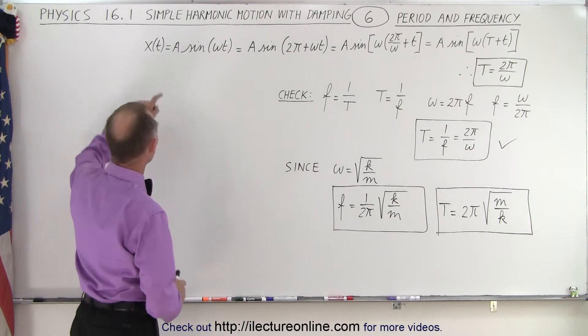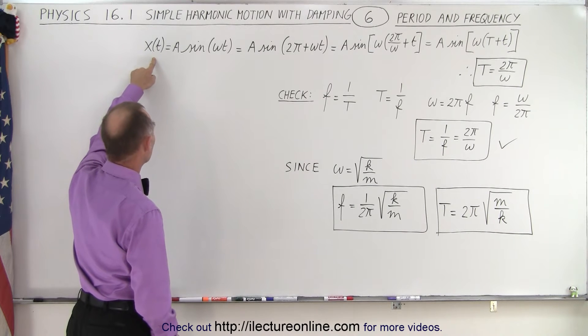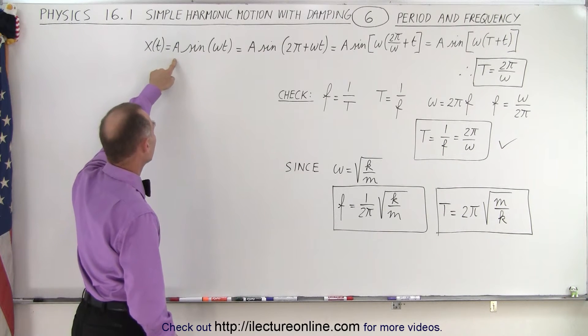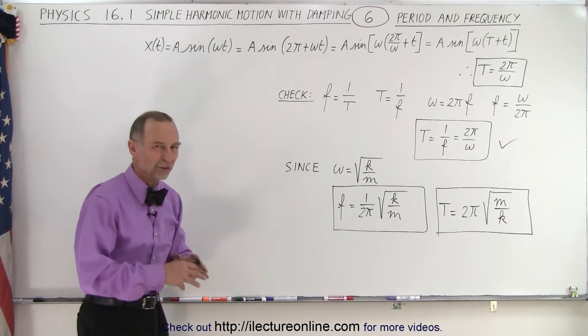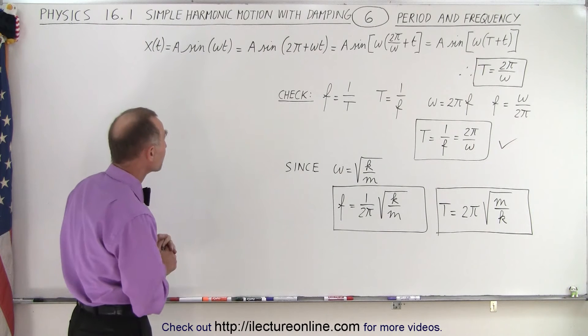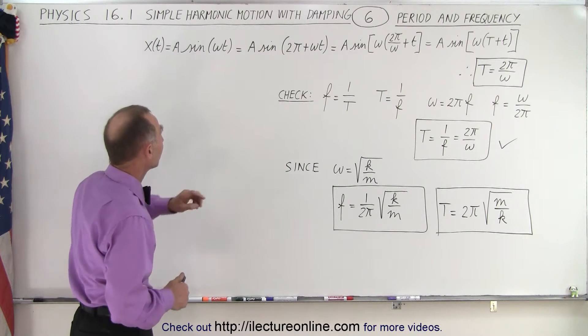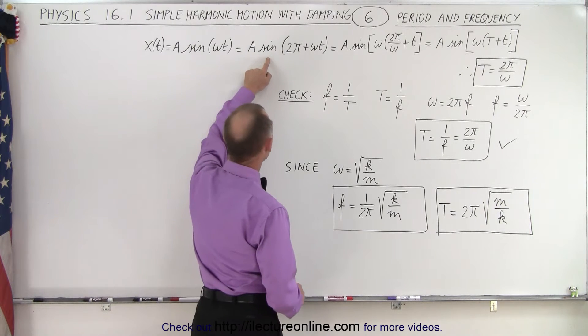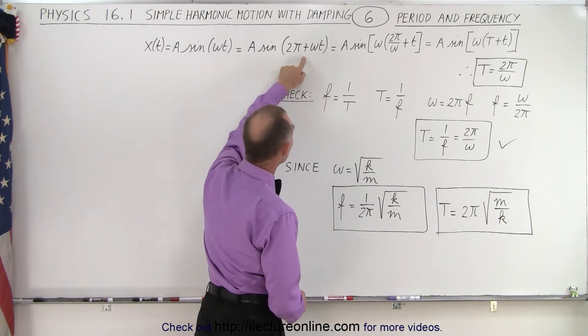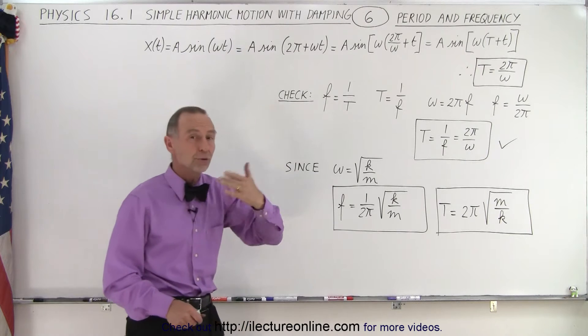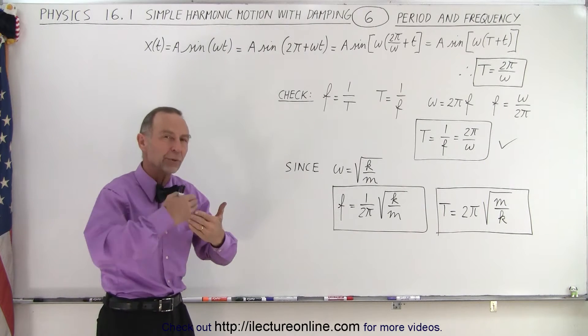Now, if we start with the general equation where x of t, the position as a function of time, is equal to the amplitude times the sine of omega t, and we'll just leave off the phase angle for now, then we can also write this as a sine of omega t plus 2 pi, because any time we add 2 pi, we're back to the same place we started.